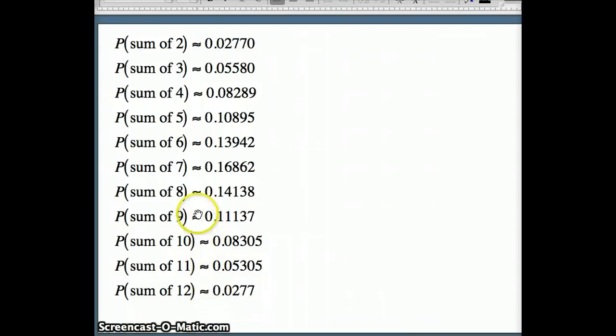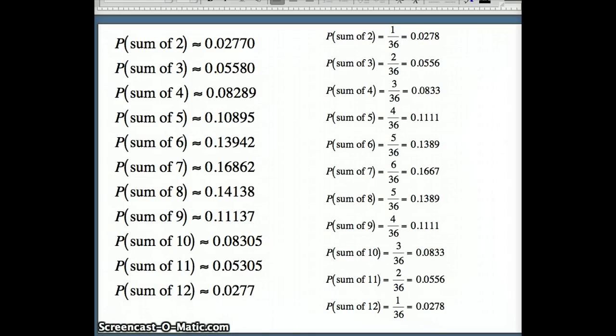So from those relative frequencies, we get these approximate probabilities. Again, notice I have the approximation sign. The law of large numbers tells us that as the number of trials increases to infinity, the relative frequency should get closer and closer to the theoretical probability. But we can see with the 100,000 trials, we're fairly close. 0.0277 was my simulated probability, 0.0278 was my theoretical probability. 0.0558 simulated probability, 0.0556 theoretical probability. So again, you can see we have some similarities between these two perspectives, using 100,000 trials to simulate the probabilities or listing the sample space with 36 elements to find the theoretical probability.